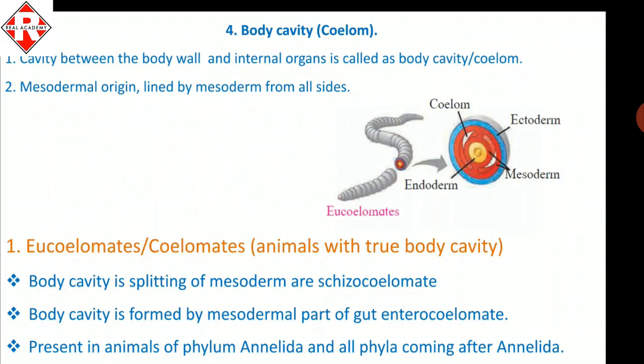The next criterion is body cavity. The cavity between the body wall and the internal organs is called the body cavity — it is an empty space filled with coelomic fluid. The body cavity originates from the mesodermal layer. If it does not originate from the mesodermal layer, it is a false cavity. This cavity must also be lined by mesoderm from all sides; if not, it is considered a false cavity.